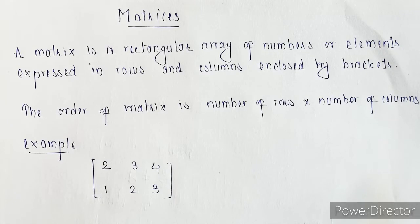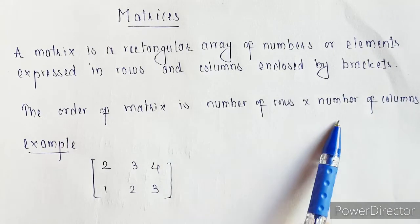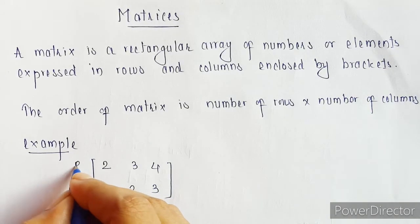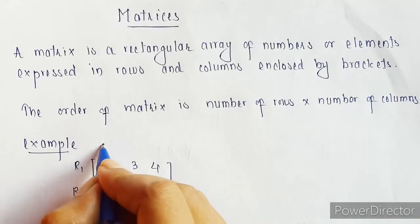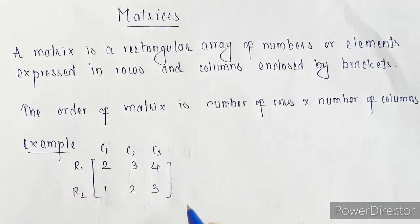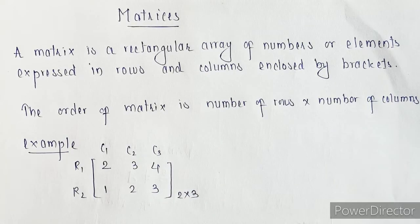The order of a matrix is given by the number of rows multiplied by the number of columns. In this case we have two rows, R1 and R2, and three columns C1, C2, and C3. So the order of this matrix will be 2 cross 3 — 2 rows and 3 columns.